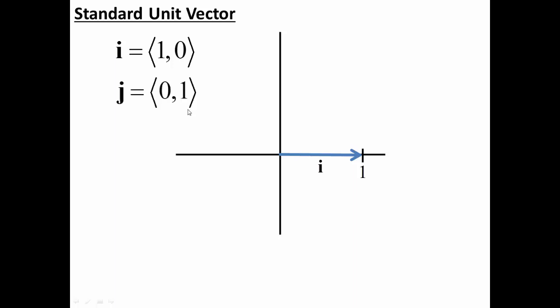j is my y standard unit vector, (0, 1). In other words, if I'm going in the j direction, I'm going up. If I'm going in the i direction, I'm going to the right.